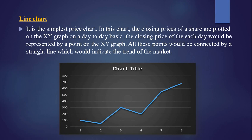The first is line chart. Line chart is the simplest price chart. In this chart, the closing prices of the shares are plotted on the X and Y graph on a day-to-day basis. The closing price of each day would be represented by a point on the X and Y graph. All these points would be connected by a straight line, which would indicate the trend of the market. In this, we plot the closing price of that particular day. At the end of the first day the price was 100, at the end of the second day it was 50, at the end of the third day 300, and so on. Those prices will be plotted and once we mark the points, we connect them by which the line chart will be ready.